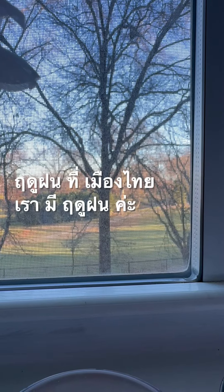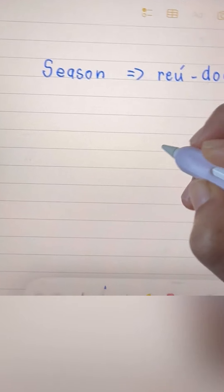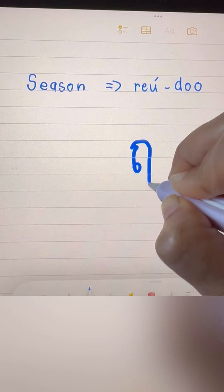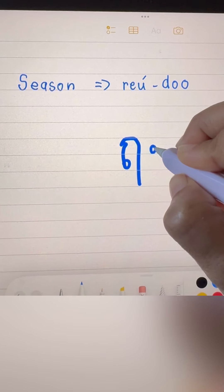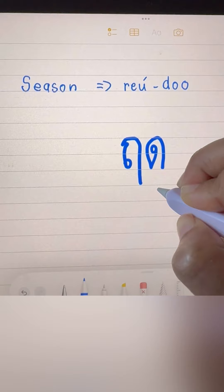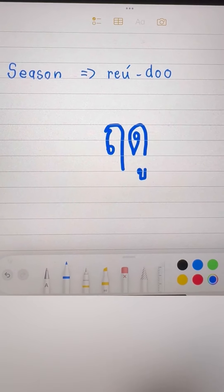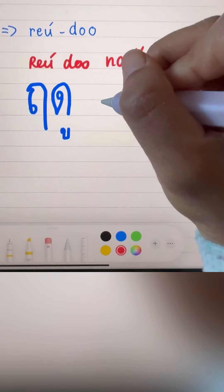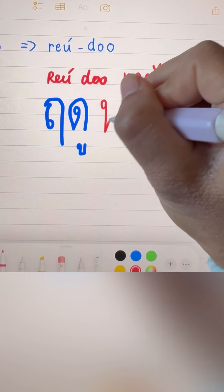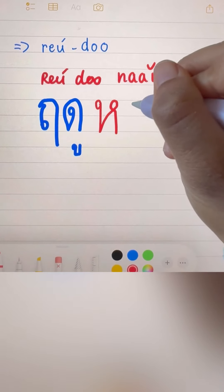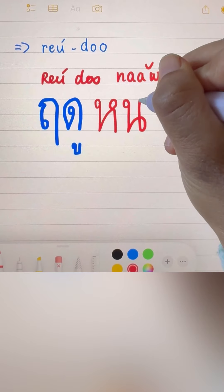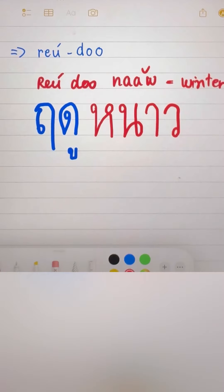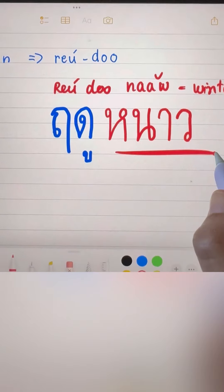The word RUDU, we're gonna use the RU, the vowel sound, RU, and then DOR DECK. For RUDU NOW, we use SILENT HOT HEAP, HOT HEAP START, SILENT with NONU, low-class consonant, SALA, and VOLVENT. So this is the word NAW, which means COLD.